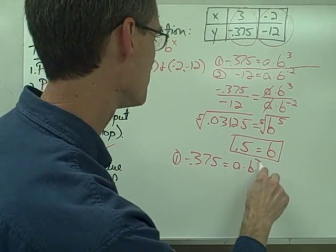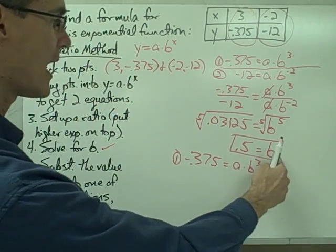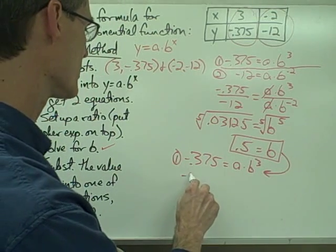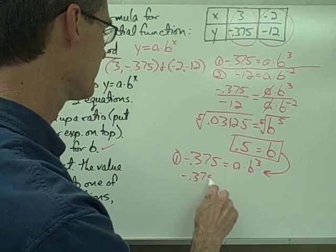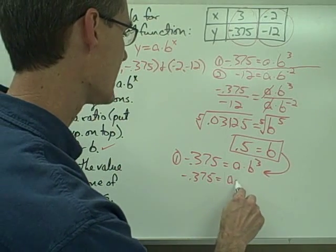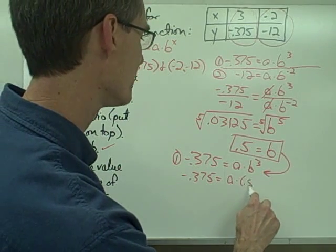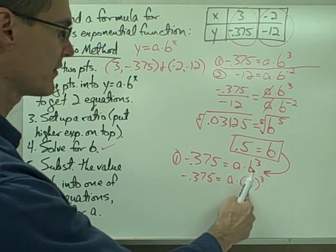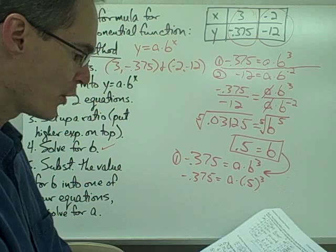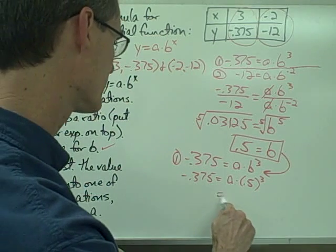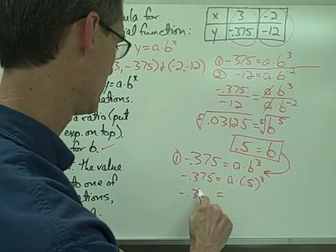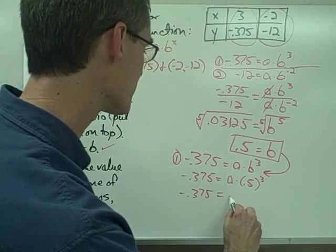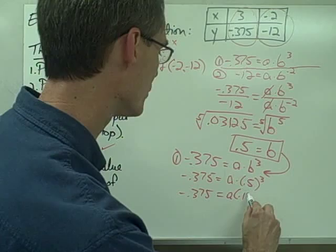So I'm going to use equation number one here. Negative 0.375 equals a times, let me just go ahead and write the thing out, a times b to the third power. Well, I want to substitute this value for b into this equation. So negative 0.375 equals a times 0.5 to the third power. So I'm substituting 0.5 in here for b. 0.5 to the third power is 0.125, so that gives me a times 0.125.